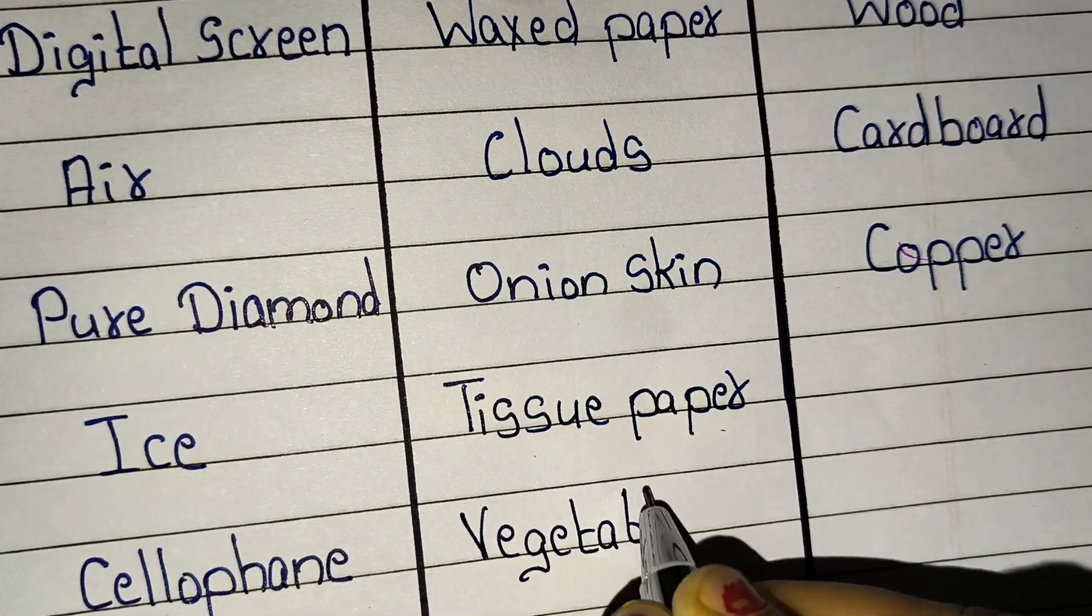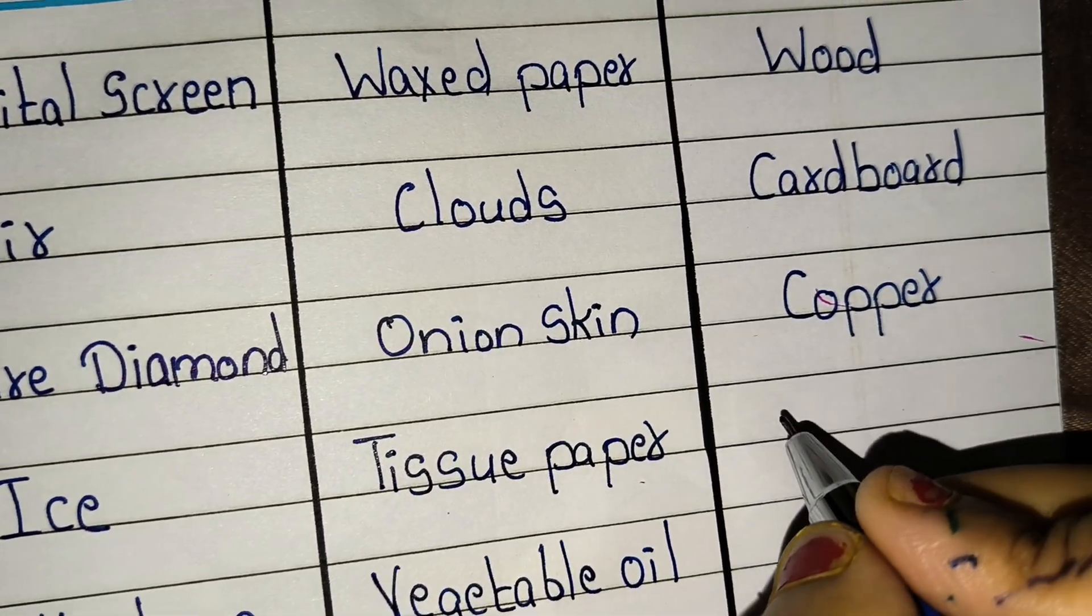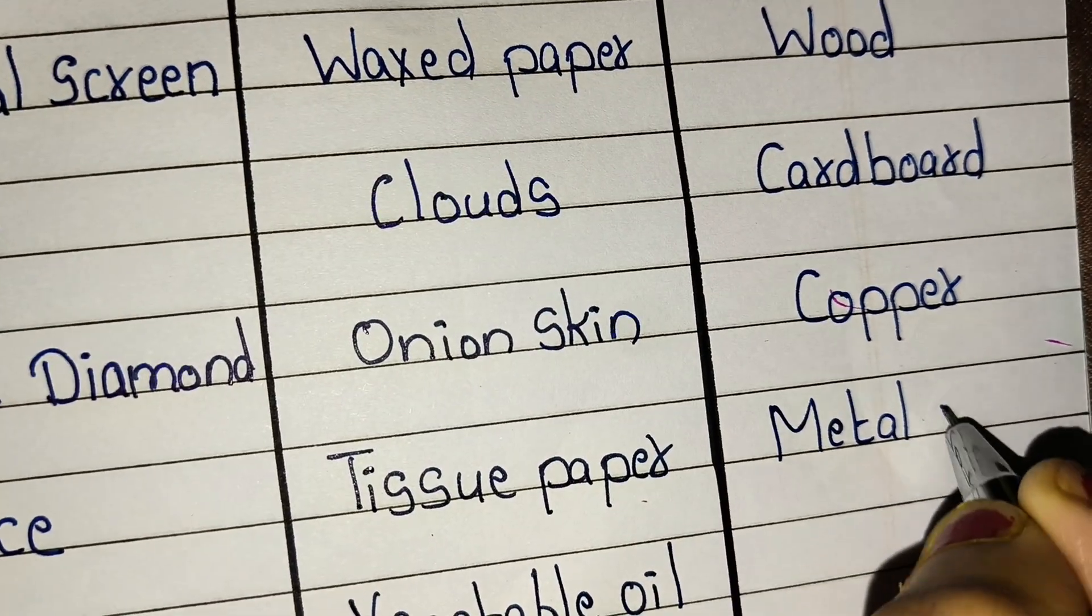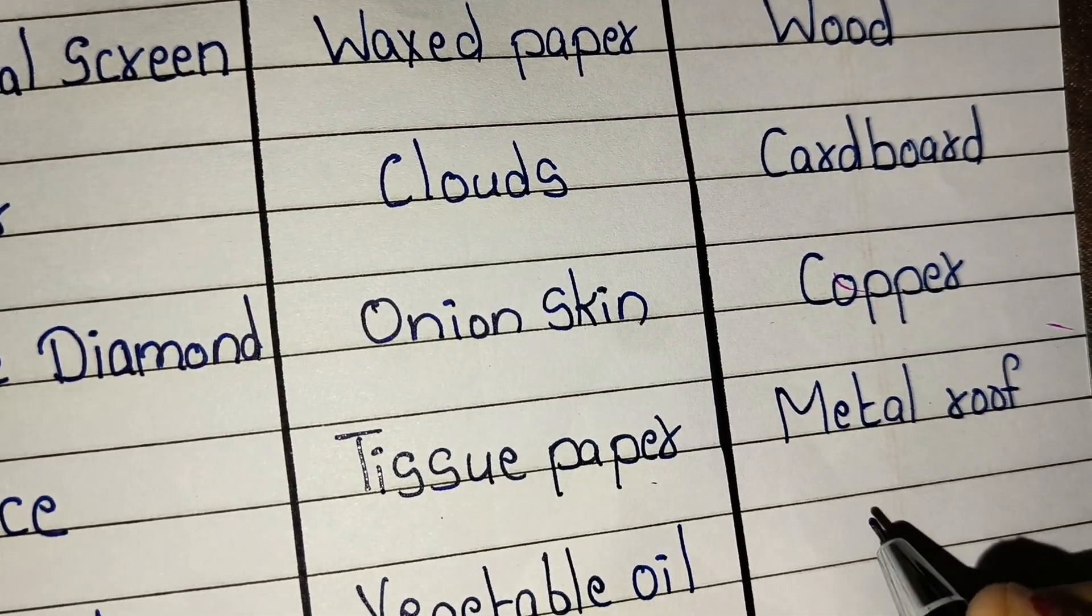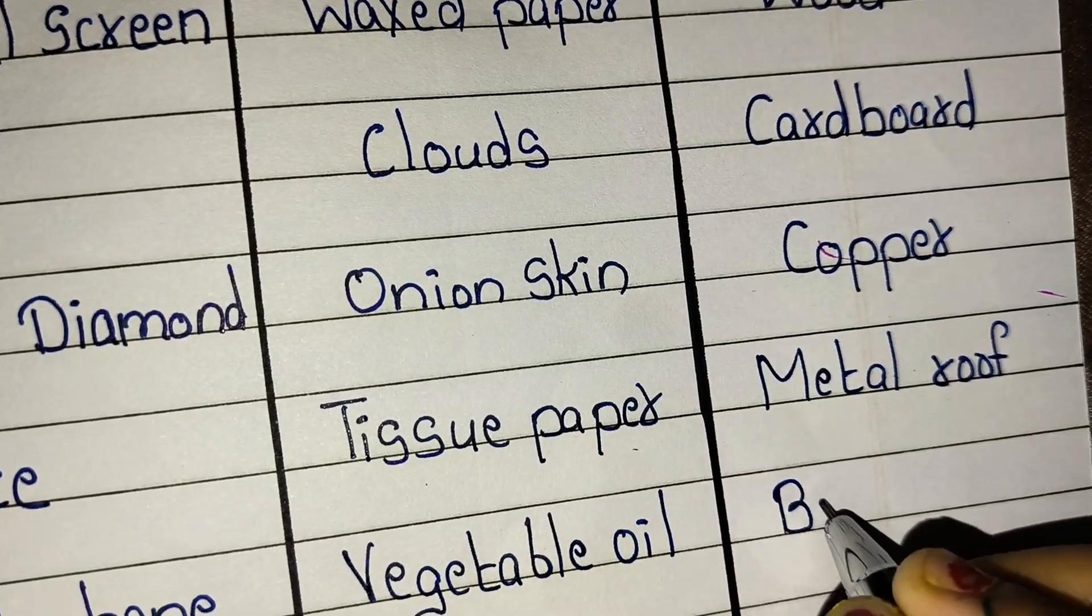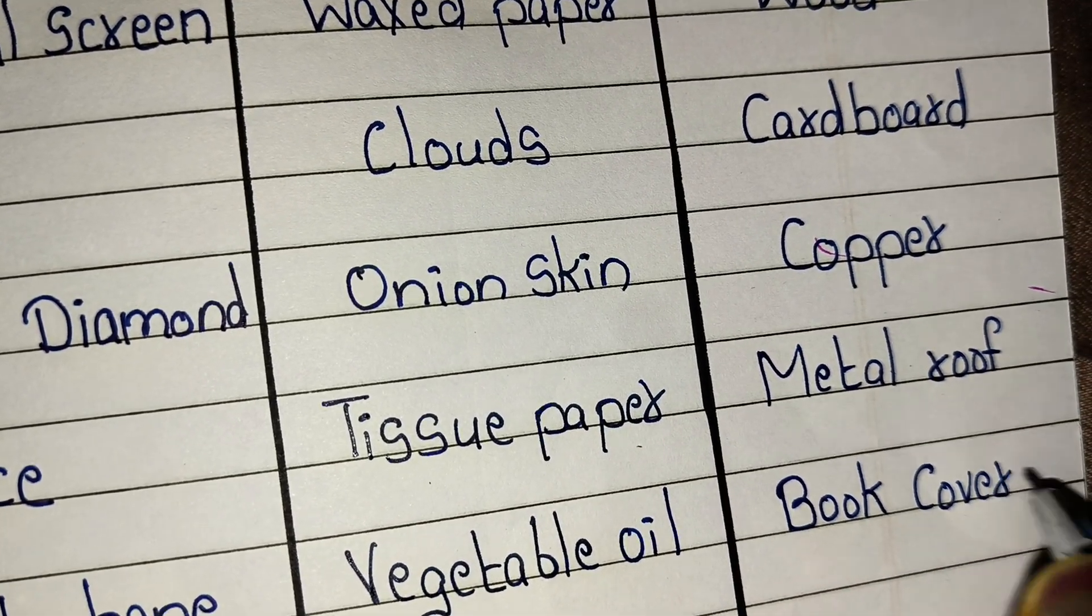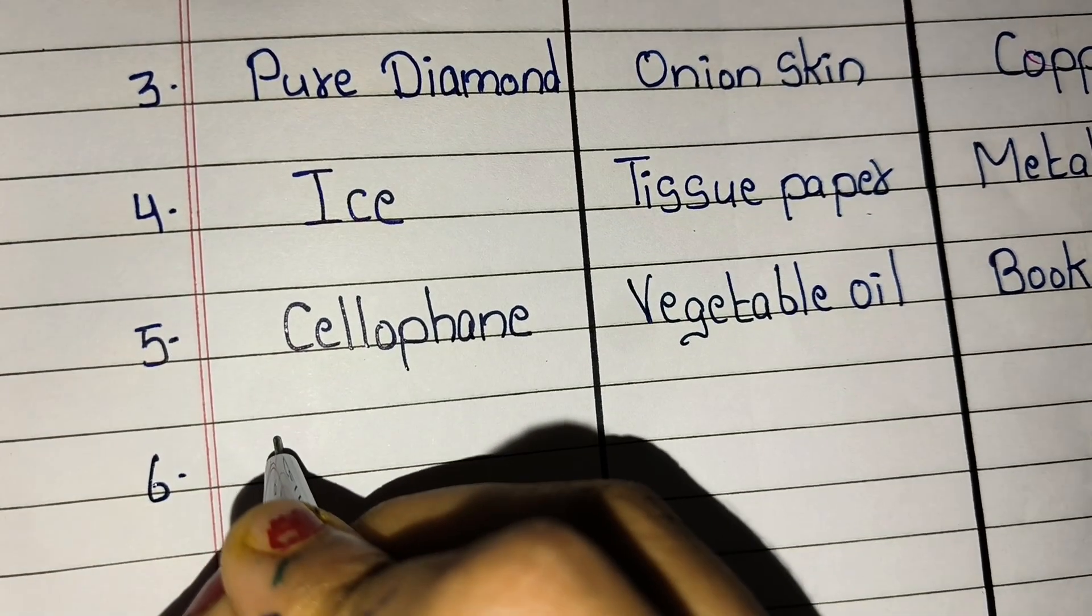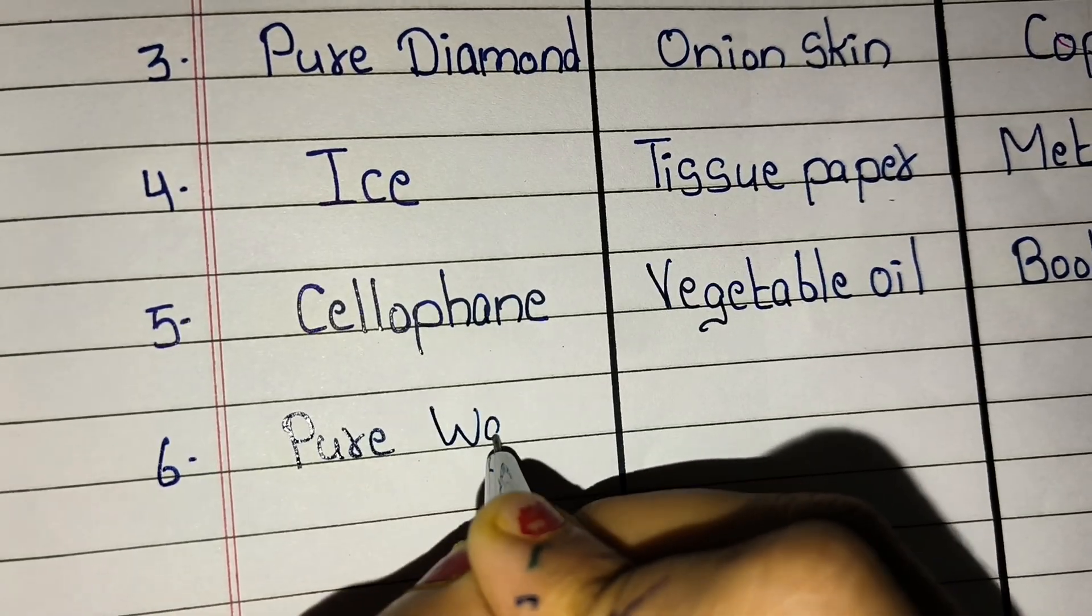Vegetable oil. Now examples of opaque are metal roof, book cover. Sixth example of transparent: pure water.